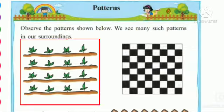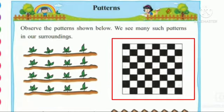In the first picture, you may see the small plants. The first plant is having four leaves, the second plant is having three leaves. Again four leaves, again three leaves — so it is called a Pattern, repeating again and again. In the second picture, again you see the same Pattern repeating again and again.